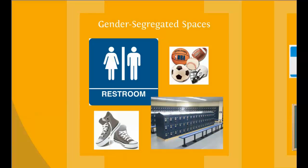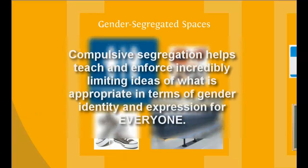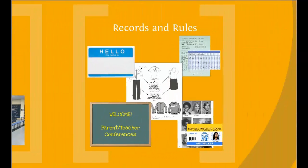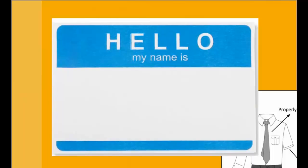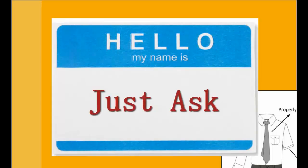While gender-segregated spaces can be particularly harmful to trans and gender non-conforming students, they can also have negative impacts on the entire student body. That compulsory segregation helps teach and enforce incredibly limiting ideas of what is appropriate in terms of gender identity and expression for everyone. Now what about all those administrative details — the records and rules that keep your school functioning in an organized way? It's pretty easy: follow the required policies in your state or district, work to affirm each student's gender identity, and make sure to prioritize their privacy. Let's start with names and pronouns. Every student has the right to be addressed by their preferred name and pronoun. You should refer to trans and gender non-conforming students as they wish, similar to students with nicknames. Not doing so can invalidate their identity and be extremely painful. If you're not sure what they prefer, just ask.